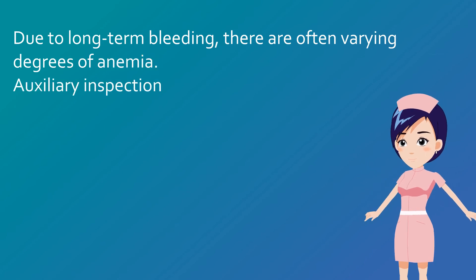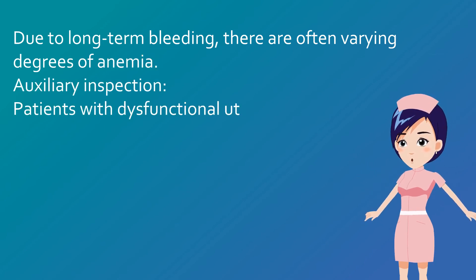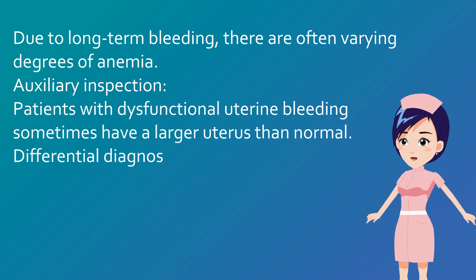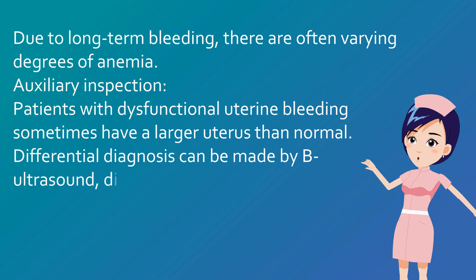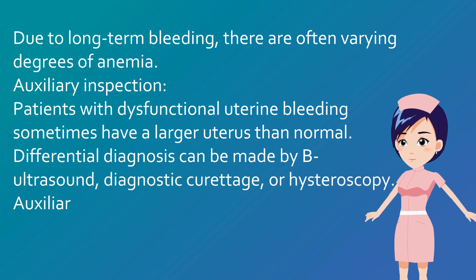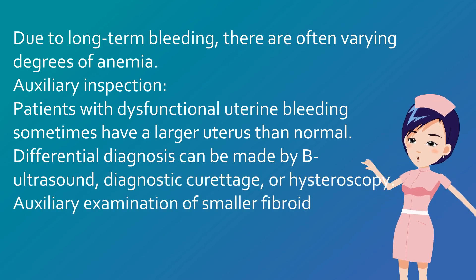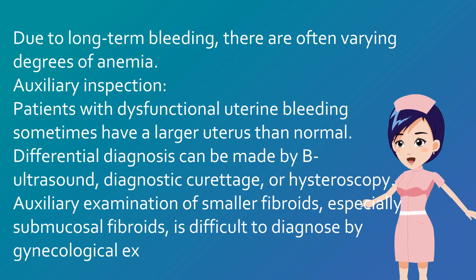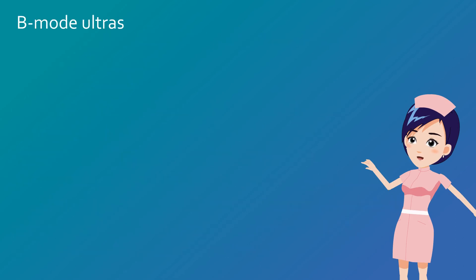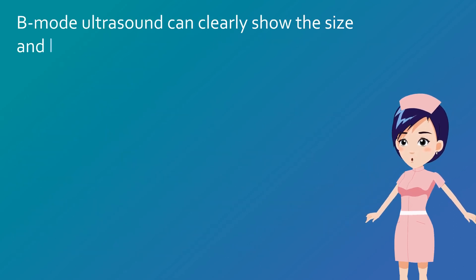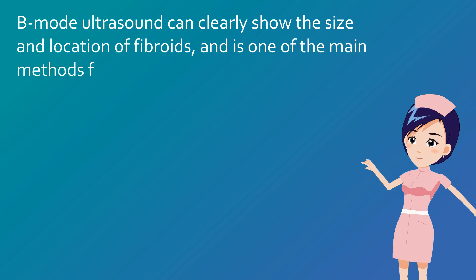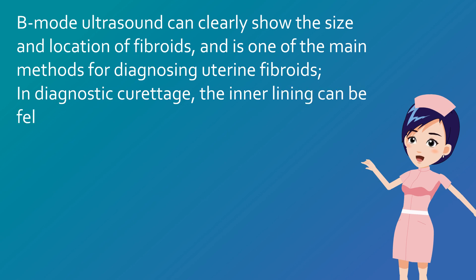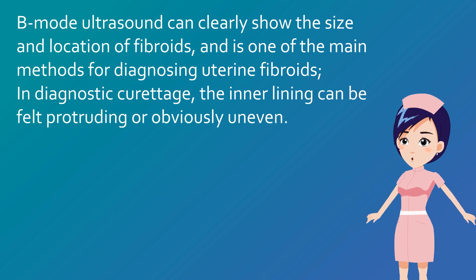For auxiliary examination: patients with dysfunctional uterine bleeding sometimes have a larger uterus than normal, and differential diagnosis can be made by B-ultrasound, diagnostic curettage, or hysteroscopy. For smaller fibroids, especially submucosal fibroids, B-mode ultrasound can clearly show their size and location, and is one of the main diagnostic methods. Through diagnostic curettage, the inner lining can be felt as protruding or obviously uneven.